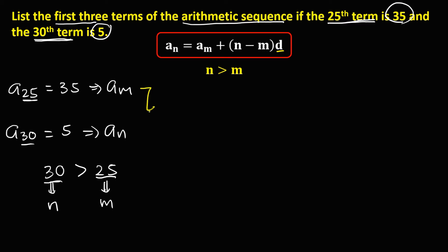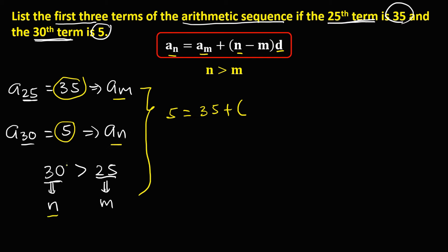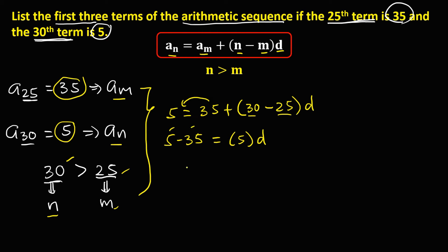To find the common difference, substitute all the values. A sub n is 5, equals a sub m which is 35, plus n minus m — that's 30 minus 25 — times the common difference. Transposing positive 35 gives us 5 minus 35 equals 5 times the common difference. Dividing both sides by 5, the common difference d equals negative 6.